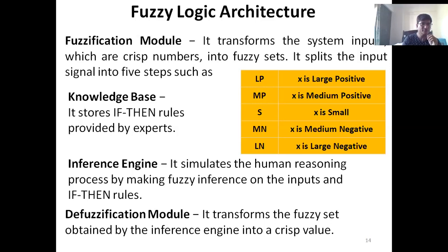All values need to be converted from crisp to fuzzy sets. For example, a value X can be represented in five different classes — one class has been named LP, which stands for large positive. So X, whatever its value, can be mapped to these classes, and we have to define the range for each.